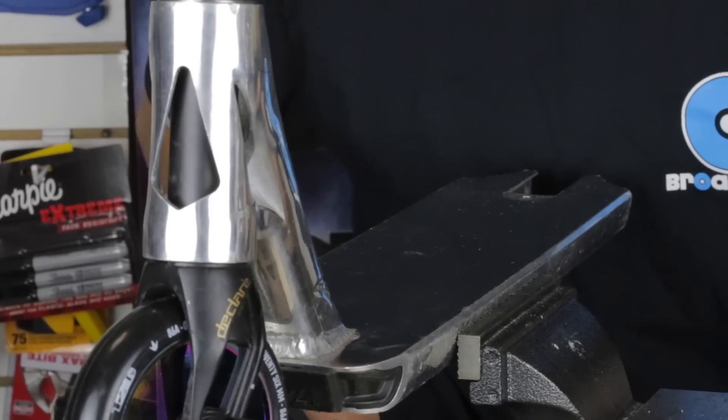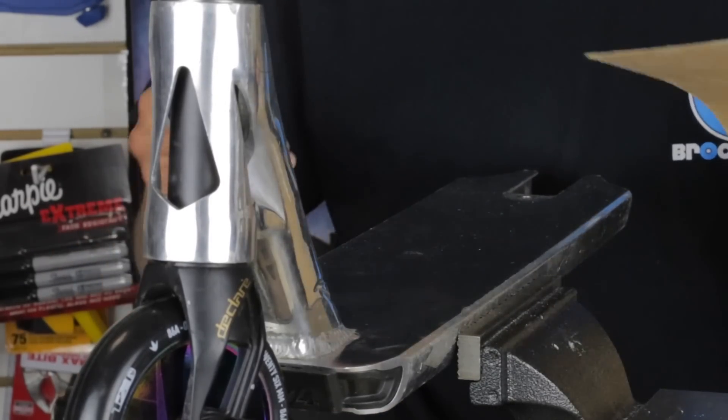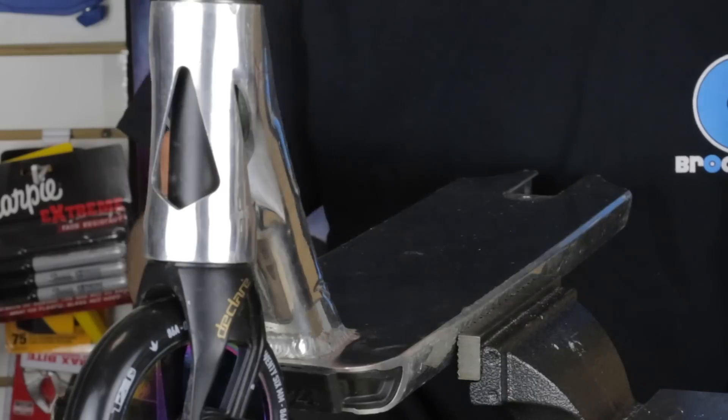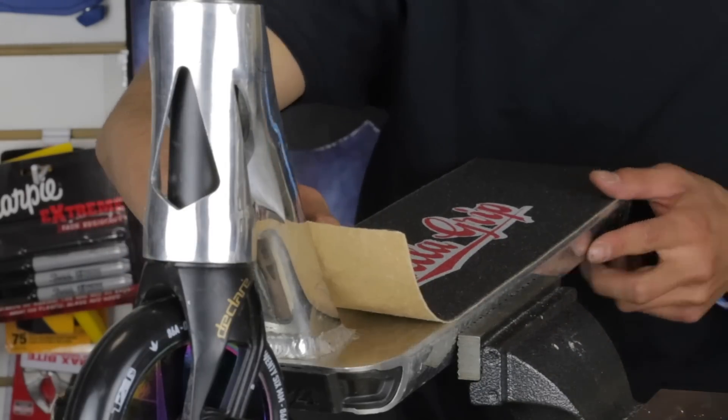So there's many ways to do grip tape. You can start from the head tube down, you can cut them up into a whole bunch of pieces and just slap them on. But today we're going to do the whole deck, that's how we do it here at Braille Pro Scooters.